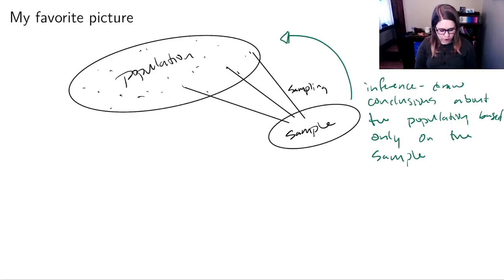As part of this, we're going to have quantities that we can compute about both the population and the sample. The ones about the population are going to be called parameters. And the ones about the sample are going to be called statistics. So we're going to be talking initially about how to calculate sample statistics. And then we're going to use that to draw conclusions about population parameters.